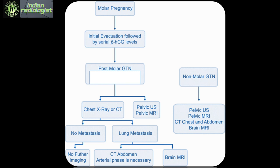Following evacuation of a molar pregnancy, post-molar gestational trophoblastic neoplasia workup requires pelvic ultrasound or MRI and a chest X-ray, since lung metastasis is the most common site. If there is no lung metastasis, no further imaging is needed. If lung metastasis is present, a complete workup is required: CT abdomen with arterial phase — as these lesions enhance in the arterial phase — and brain MRI. The same workup applies to non-molar gestational trophoblastic neoplasia.